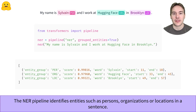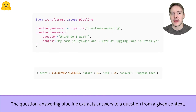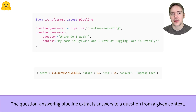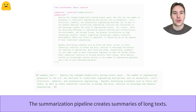Another task available with the pipeline API is extractive question answering. Providing a context and a question, the model will identify the span of text in the context containing the answer to the question. Getting short summaries of very long articles is also something the Transformers library can help with, using the summarization pipeline.